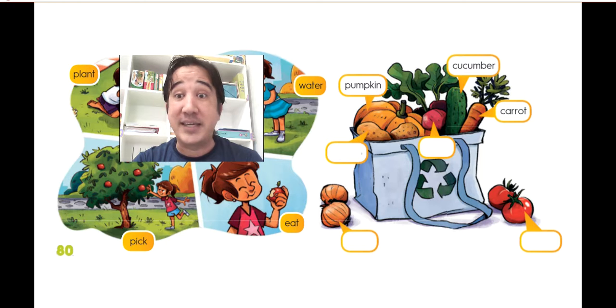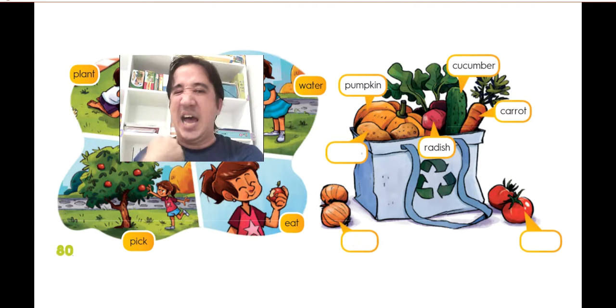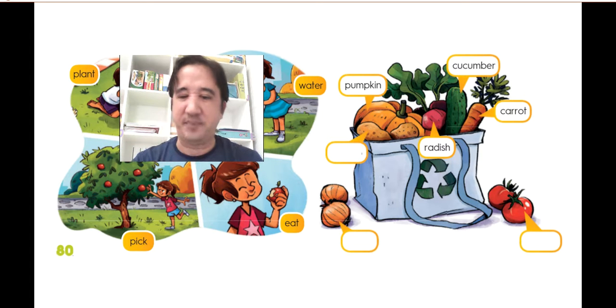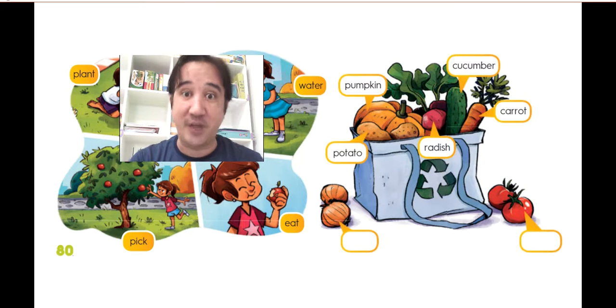The next one is a carrot. Carrot, yes, it's a carrot. Bunny and rabbits love carrots. Then we have radish. Radish, I don't like radish. For me, it's not good. We also have potato or potato.